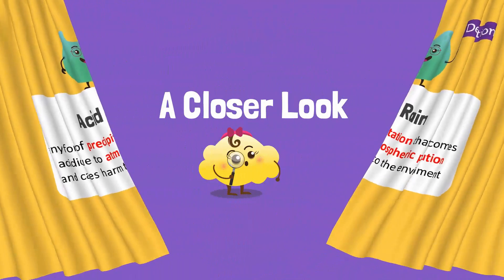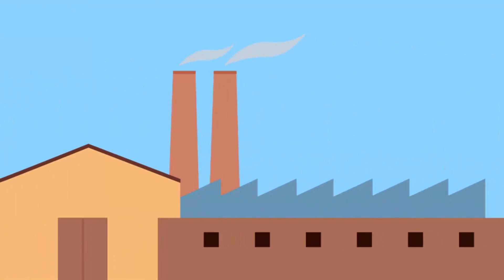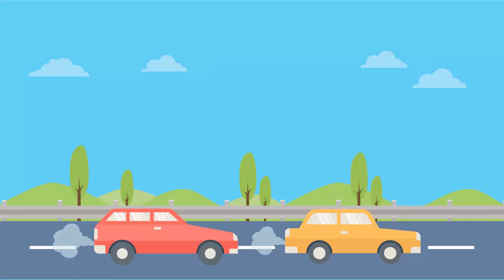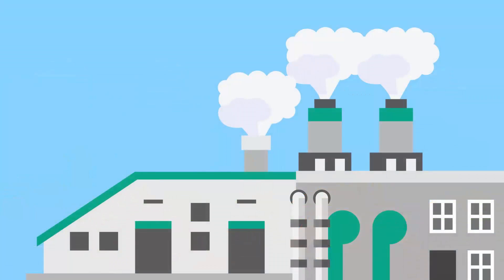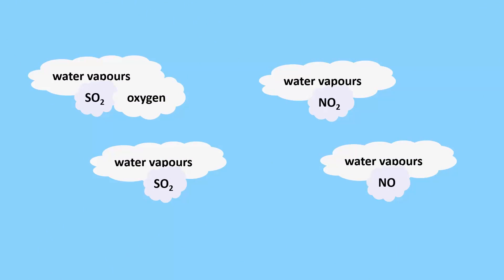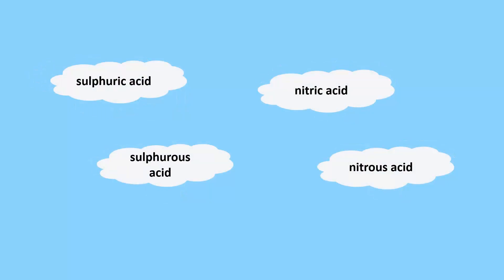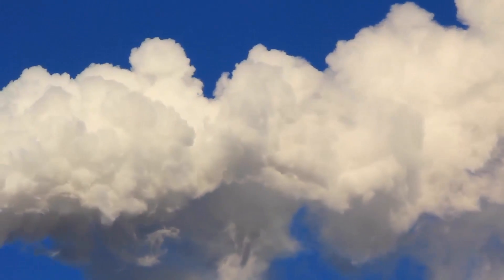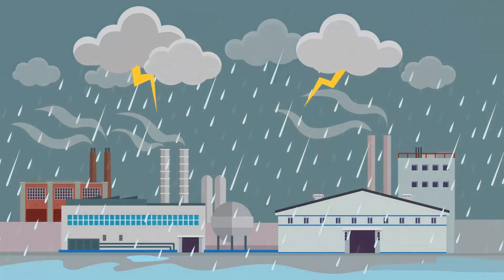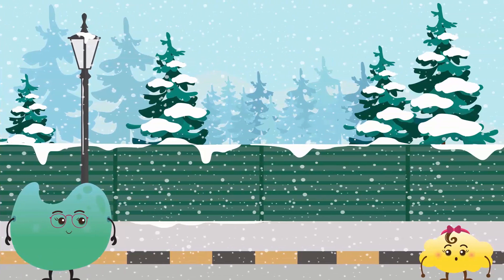Let's take a closer look at the causes and effects of acid rain. Humans burn fossil fuels on a large scale to produce electricity and other industrial products. Fuel is also used in automobiles. Burning fossil fuels emits gases like sulfur dioxide and nitrogen oxides. These gases combine with water vapors, oxygen, and other chemicals in the atmosphere to form solutions of sulfuric acid and nitric acid. The wind can spread these gases across hundreds of miles, resulting in acid rain in more than one place. These acidic solutions fall onto the earth in the form of precipitation like rainfall, hail, or snowfall, thus creating acid rain.